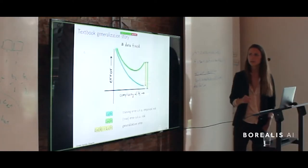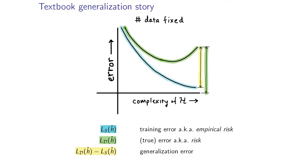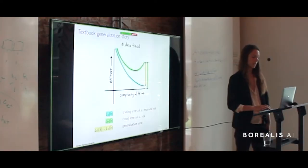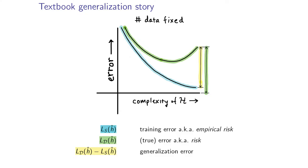The classical textbook generalization story can be captured by this plot. As we allow more and more complex models, the training error decreases. The theory predicts that the test error, marked in green, decreases initially but then starts going up as we start overfitting. This gap between the green and blue lines — the true and the train error — is called the generalization error.